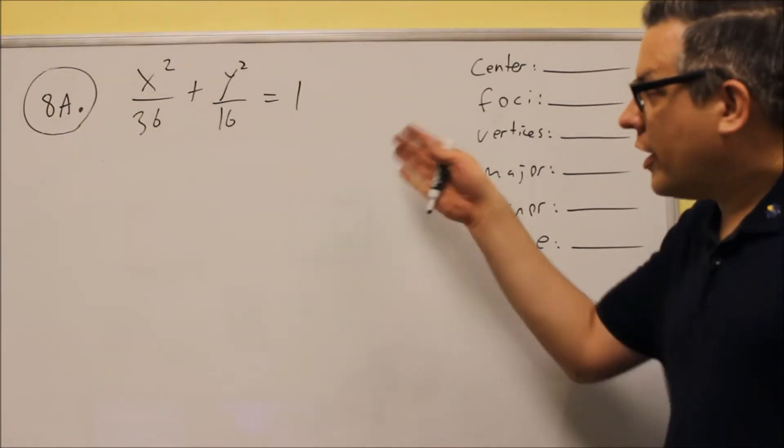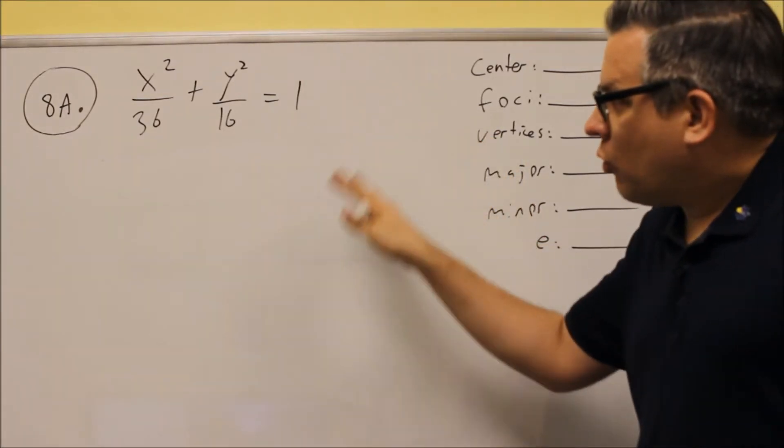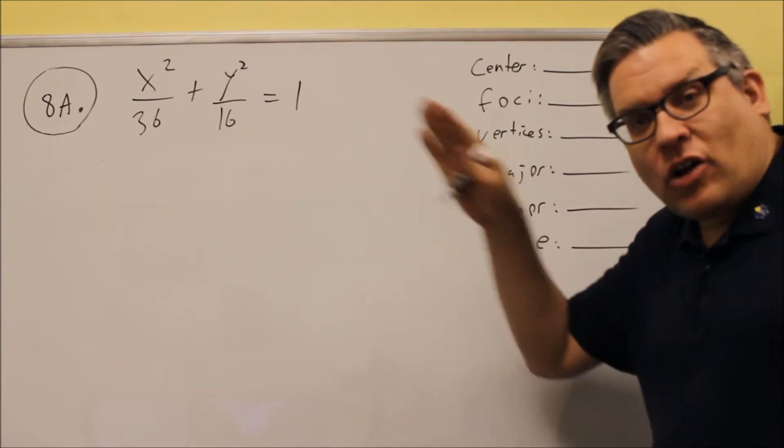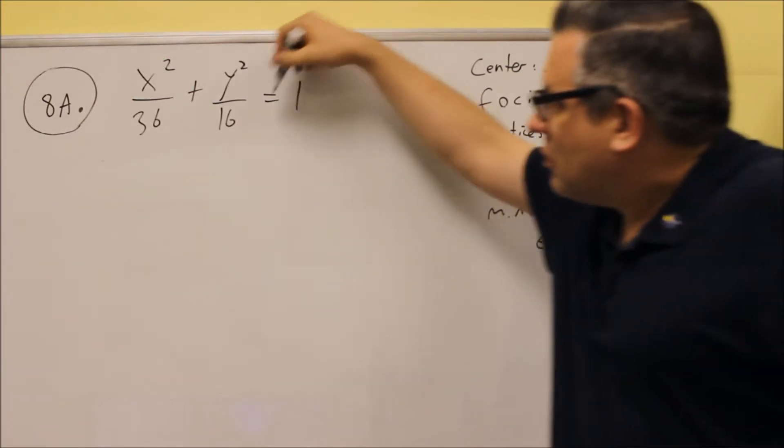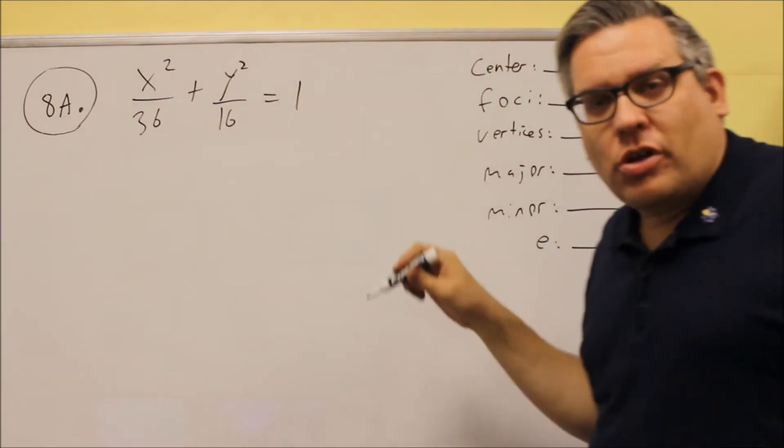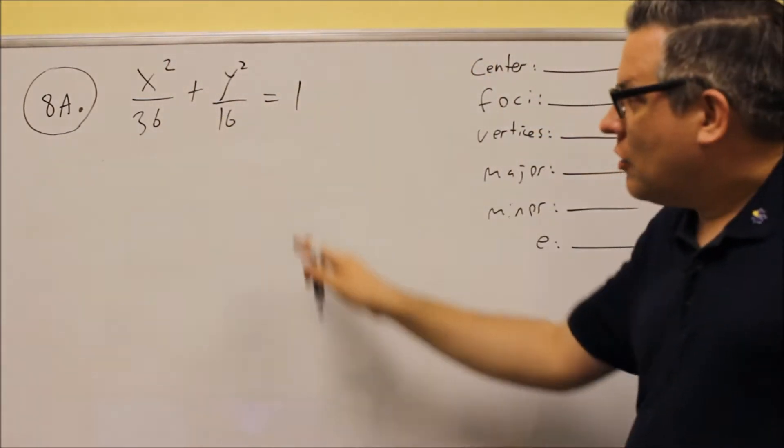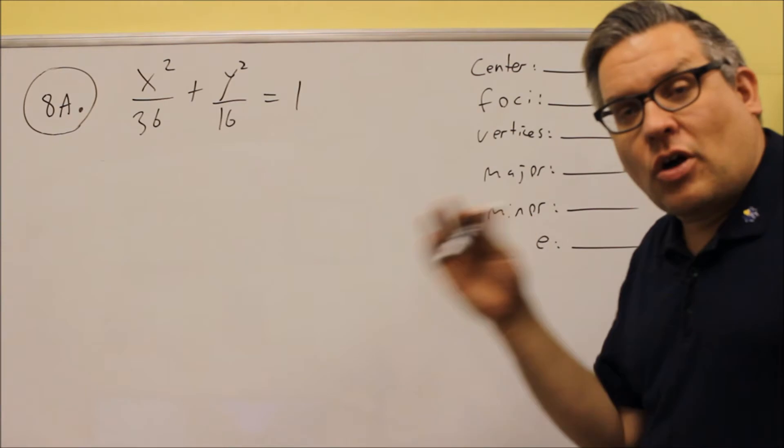Okay, for 8, it requires you to work with an ellipse. Now, how do I know it's an ellipse? Well, one way I can tell it's an ellipse is based on the way the formula is. If you see a plus sign with something equal to 1, that tells you it's an ellipse.